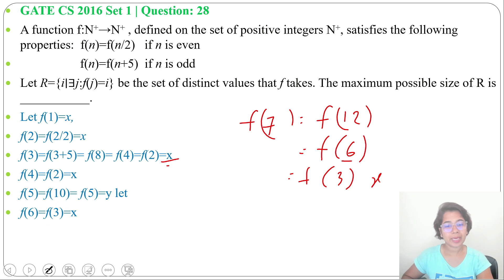Even f(8) - f(8) will be x. Now f(9). f(9) will be 9+5, f(14). 14 is an even number, f(7). And f(7) we already found is x.